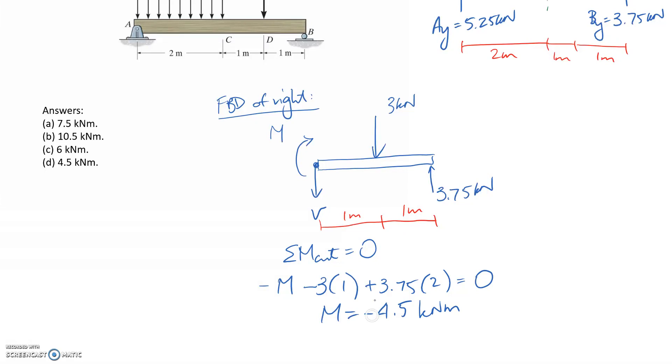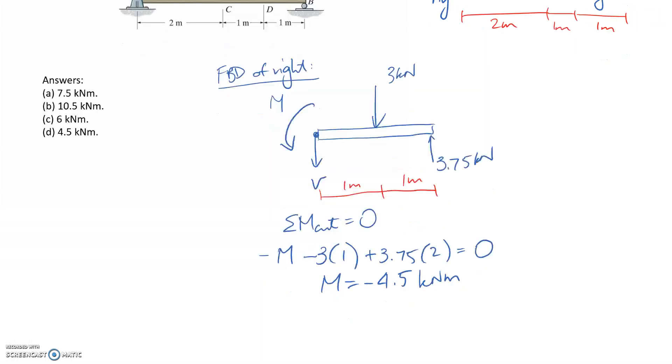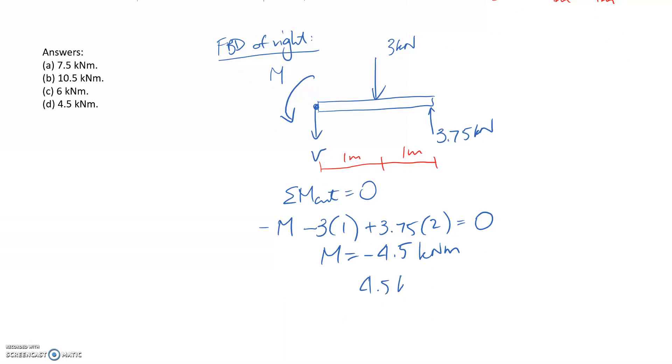It's come out as a negative, which means I got the direction incorrect. So actually this is going the opposite direction, which is anticlockwise. I've got 4.5 kilonewton meters anticlockwise. That's the sign convention - anticlockwise is positive.